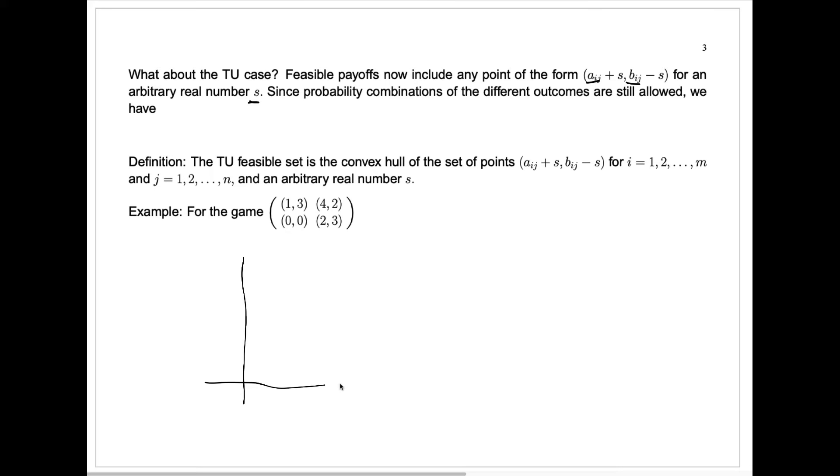Again, for this example, player one represented in the horizontal axis, player two with the vertical axis. We have those same points, zero zero, one three, two three, and four two. But now for each of those points, let me actually fix this a little bit. We have the two three is kind of more over here.